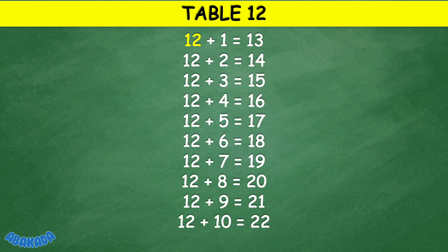Table 12: 12 plus 1 equals 13, 12 plus 2 equals 14, 12 plus 3 equals 15, 12 plus 4 equals 16, 12 plus 5 equals 17, 12 plus 6 equals 18, 12 plus 7 equals 19, 12 plus 8 equals 20, 12 plus 9 equals 21, 12 plus 10 equals 22.